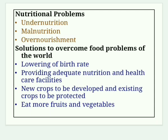Overnourishment means people who consume food in excess of their nutritional requirement; they are affected by obesity, which leads to blood pressure, heart problems and diabetes. For undernutrition and malnourishment, poverty is the main cause. The world's poorest people live in Asia and Africa where hunger is common and they cannot afford to purchase food.